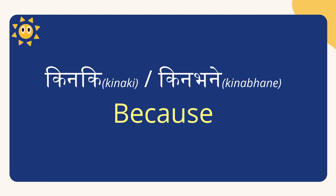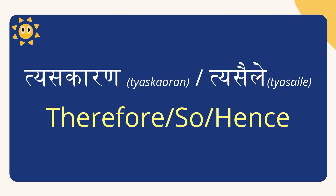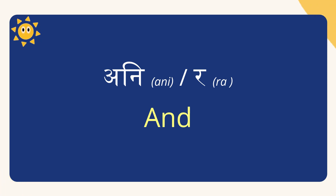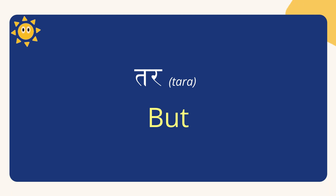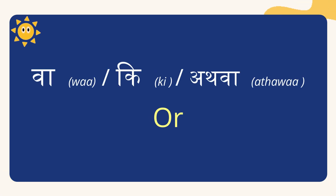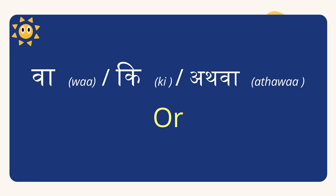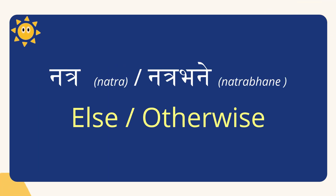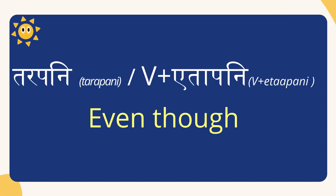Some of the mostly spoken conjunctions are: kinaki or kinabhane, which both mean 'because'; teshkaran or tesaili, which both mean 'therefore', 'so', or 'hence'; ani and ra, which mean 'and'; tara, meaning 'but'; wa, ki, or athava, which all mean 'or'; and natra or natra bane, which means 'else'.